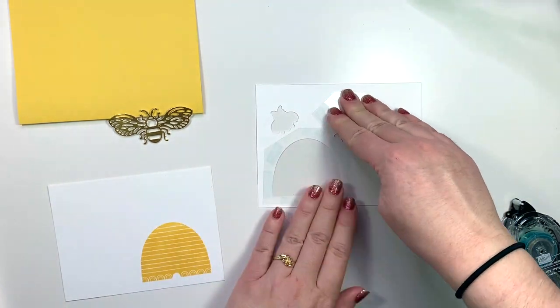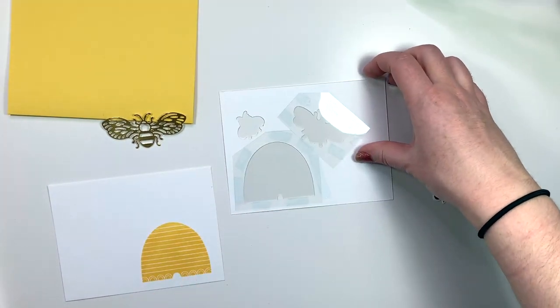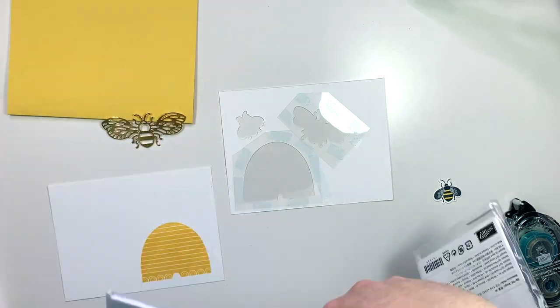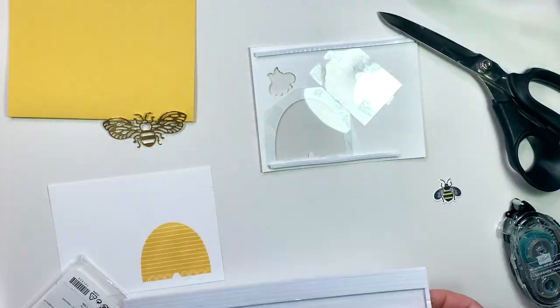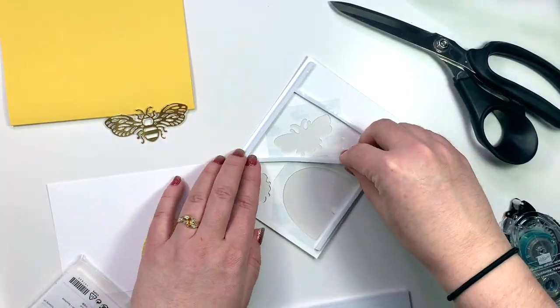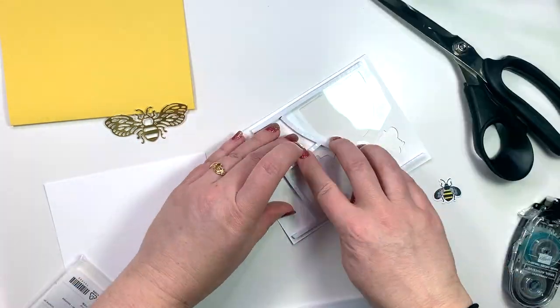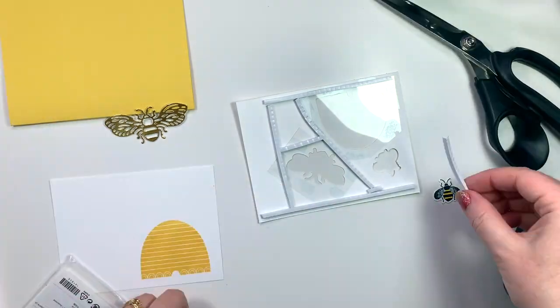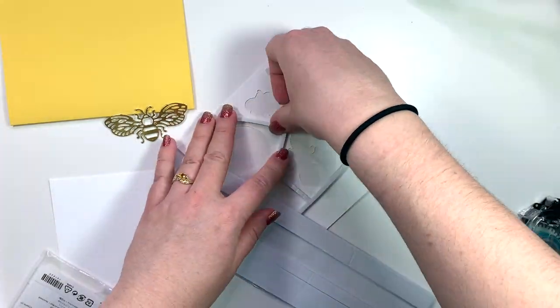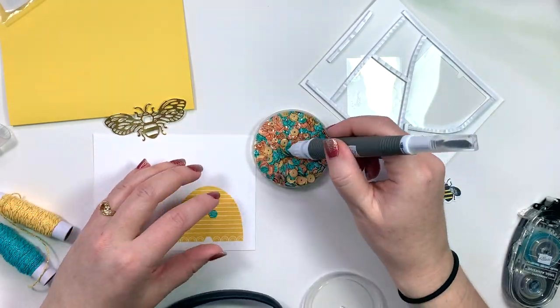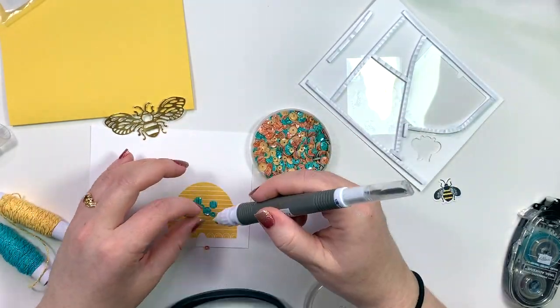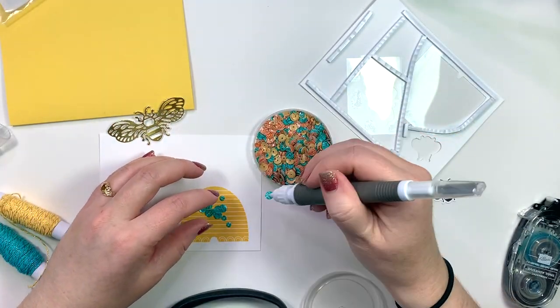And once I have that all adhered using that snail I'm going to get out my foam adhesive strips. Now these are nice because they're very tall. You could use some dimensionals but you'd need quite a few because to do shaker cards you really want to make sure that you frame really well the areas that you want to have the sequins or beads, whatever you're using for your shaker inside.